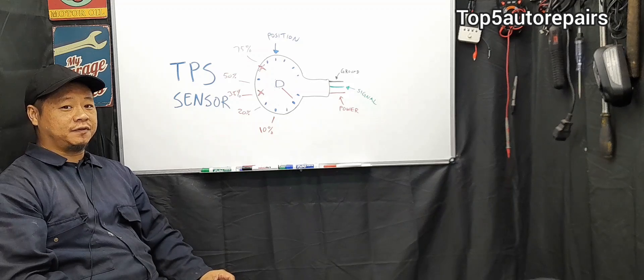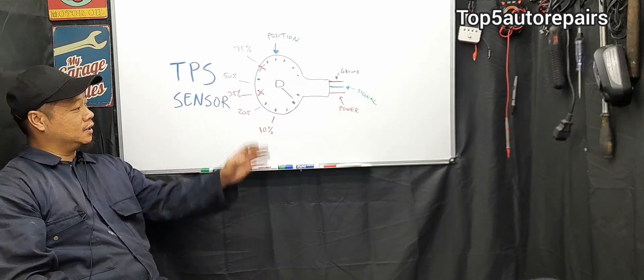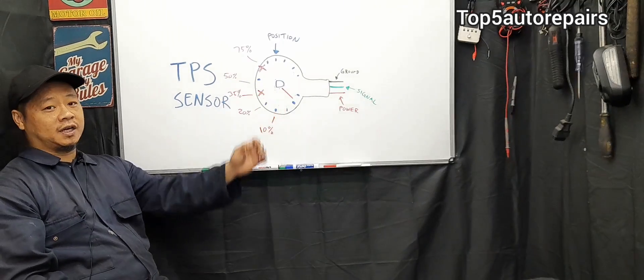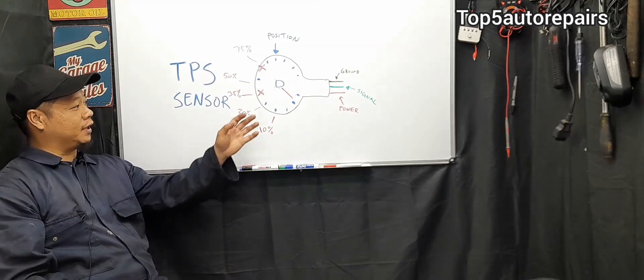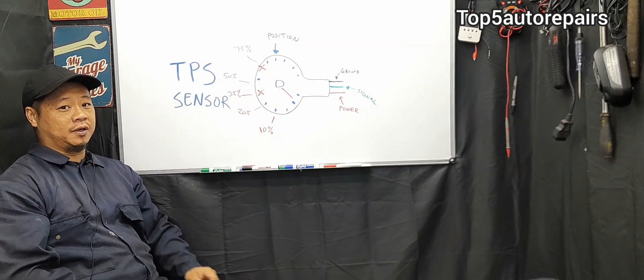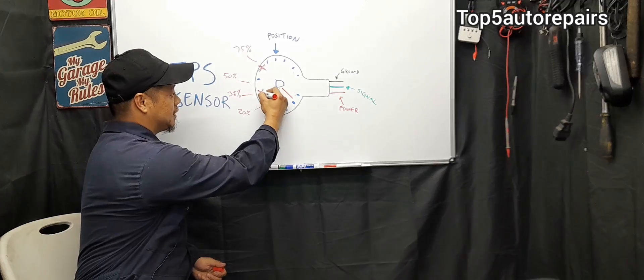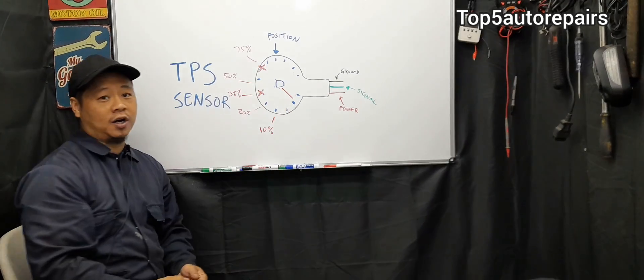The number one reason why TPS sensor fails is due to worn contact points. If one or more of these contact points become worn, the computer cannot tell the fuel injector to spray, simply because it's going to be missing signals due to these worn contact points.